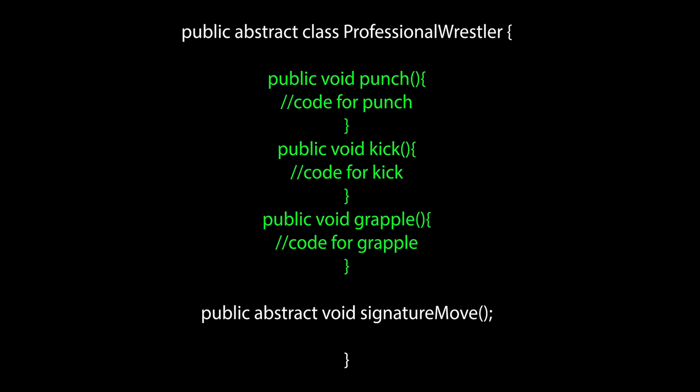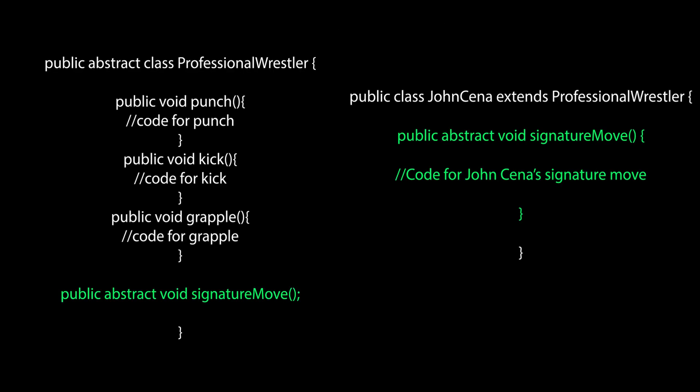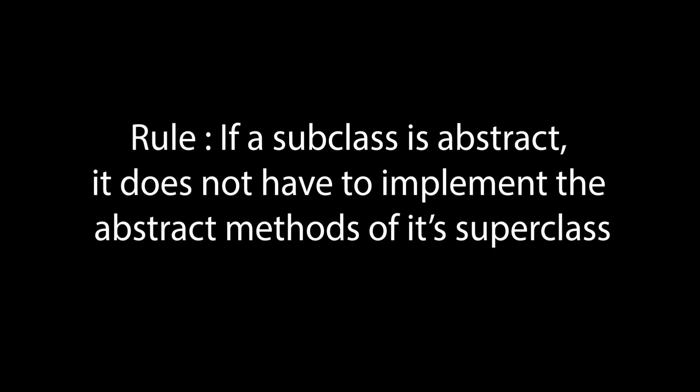This brings us to abstract methods and abstract classes. An abstract class is a class that contains both normal methods with their concrete implementations as well as unimplemented abstract methods. When a subclass extends an abstract class, it has the obligation of implementing all the unimplemented abstract methods found in it. In this way, the abstract class acts as both a superclass to inherit from and a blueprint showing the subclass what it must implement. For example, if John Cena extends the abstract superclass professional wrestler, it must implement the abstract method signature move. Note that if John Cena itself were an abstract class, it would not have to implement those abstract methods.